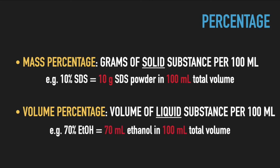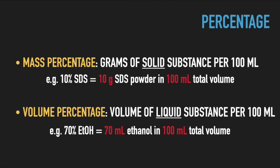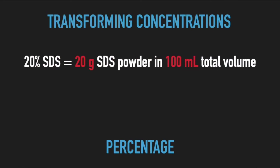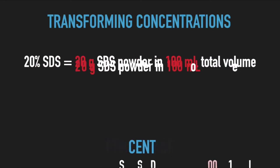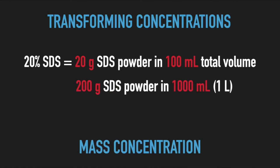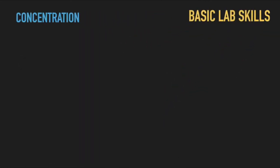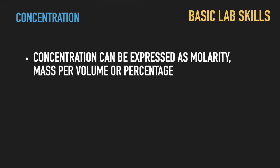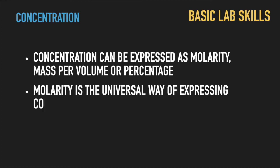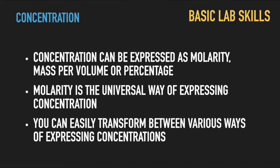Percentage concentrations are mostly used for convenience or historic reasons. Importantly, you can easily transform between various ways of expressing concentrations. For example, 20 mass percent SDS refers to 20 g SDS powder per 100 ml, or 200 g SDS per liter. As we know the molecular weight of SDS — that is, 288.4 g per mol — we can easily calculate its molarity: 200 g divided by 288.4 g per mol yields approximately 0.7 mol per liter. So, the concentration of a reagent can be expressed as molarity, mass per volume, or mass or volume percentage. Molarity is a universal way of expressing concentration, but others can be used for convenience. If you know the molecular weight of a chemical, you can easily transform mass concentration or percentage into molarity and back.